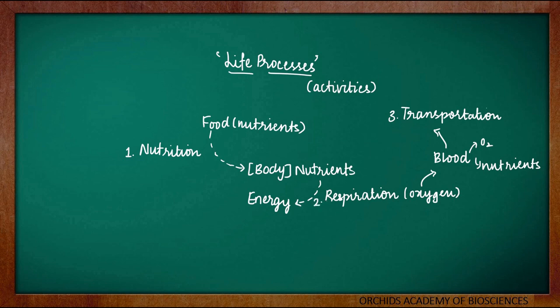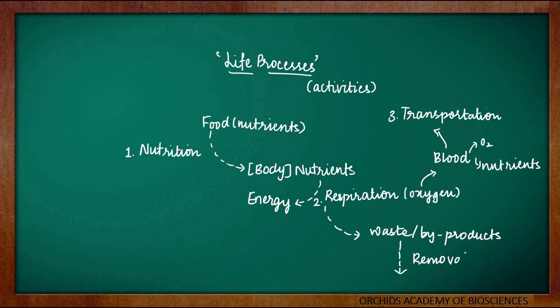We have seen what is nutrition, what is respiration and then transportation. There are various biochemical processes or reactions which are taking place in our body — respiration is one such process. During these biochemical reactions, there are various waste products that are generated. These waste products or byproducts have to be removed from our body. The process of removal of these waste products is called as excretion, and this is the fourth important life process. Excretion is necessary because the waste is not only useless for the body, but can be harmful or toxic if stored in the body.